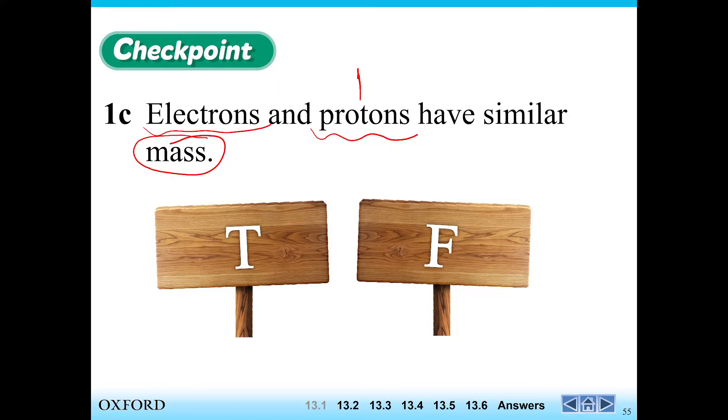But electrons over here, it's even much, much, much smaller. The mass of electrons is much smaller. They do not have similar mass. The ones that have similar mass are protons and neutrons. So this is also false.